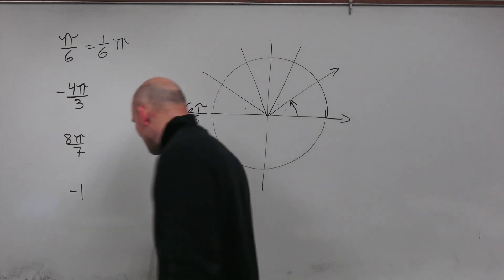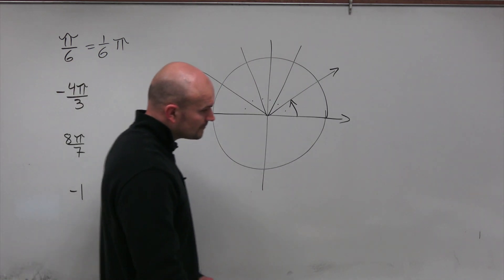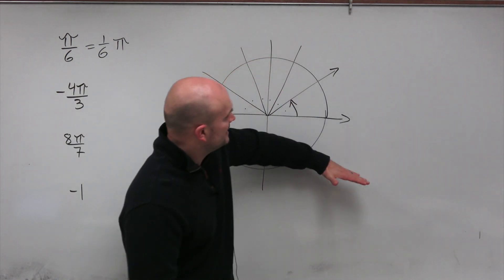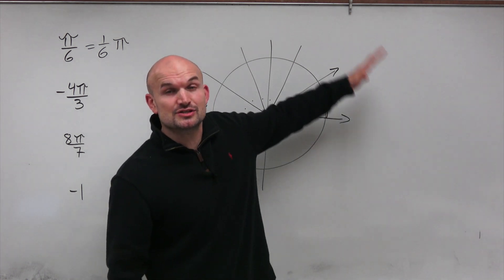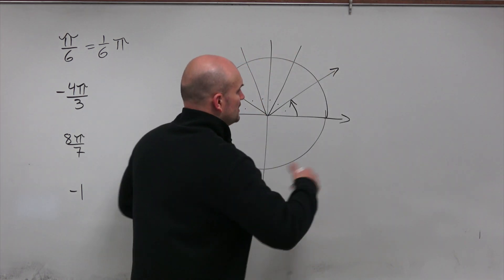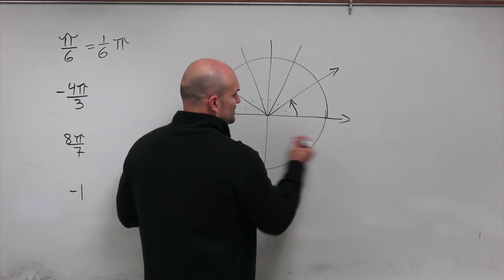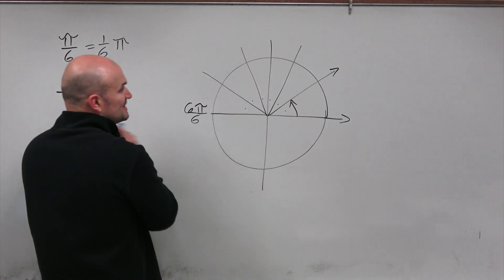Now let's look at negative 4 pi over 3. So when you're looking at negative, in standard form, a positive rotation is going to be counterclockwise, whereas a negative rotation will be clockwise. So what we're going to do in this case is we're actually going to go in the opposite direction.